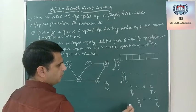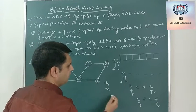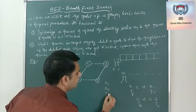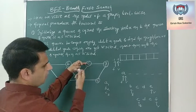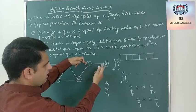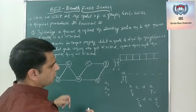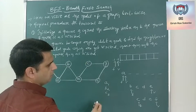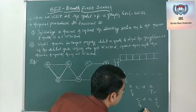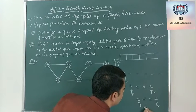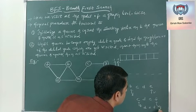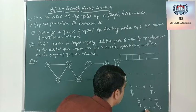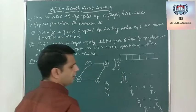Next node to be deleted is C, so it is C3. The neighbor of C which is not visited is G. Put G onto the queue. After C gets deleted, the queue contains D, E, F and G.